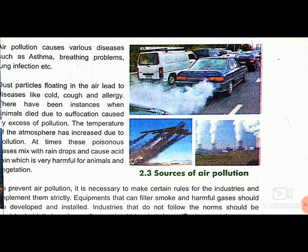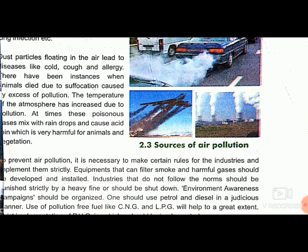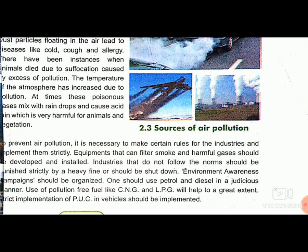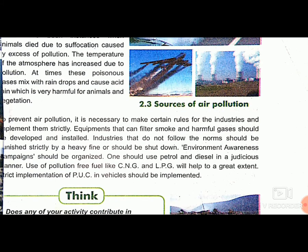To prevent air pollution, it is necessary to make certain rules for industry and implement them strictly. We have learned the causes of air pollution, the effects of air pollution, and now we are studying the solutions. Equipment that can filter smoke and harmful gases should be implemented in industries. Industries that do not follow the rules should be punished strictly by heavy fines or should be shut down. Environment awareness campaigns should be organized. One should use petrol and diesel in a judicious manner, and use pollution-free fuels like CNG and LPG.